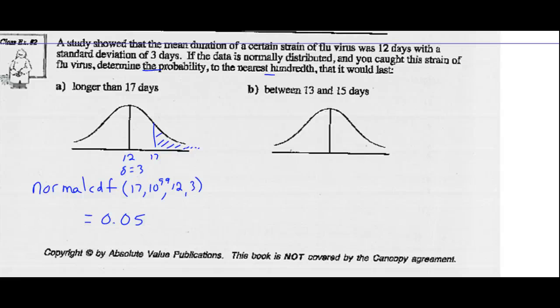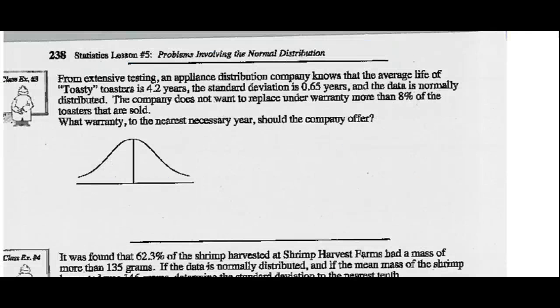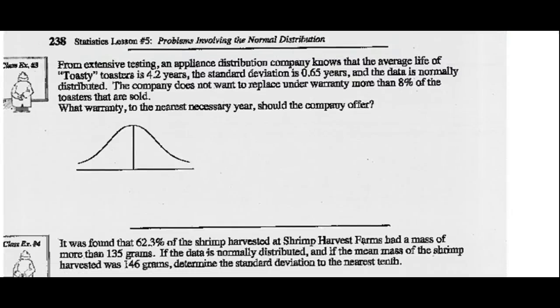Part B: Last between 13 and 15 days. Well, here's 12, standard deviation is 3. Here's 13 and there's 15. So we want that area under the curve. So again, normal CDF. Lower limit is 13, upper limit is 15. The mean is 12 and the standard deviation is 3. You type that into your calculator, and we're going to get 0.21. So we did those in Lesson 6, there they are again in Lesson 5.